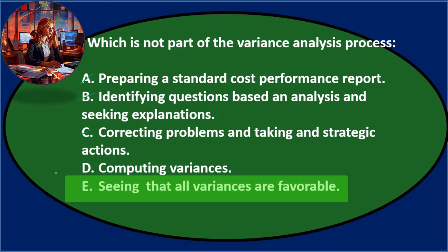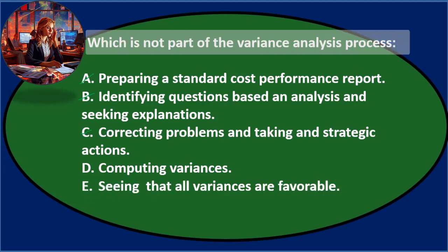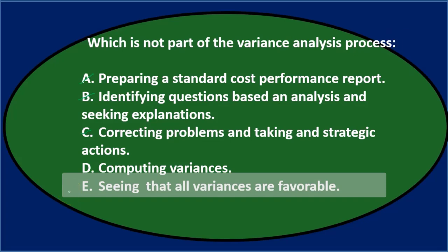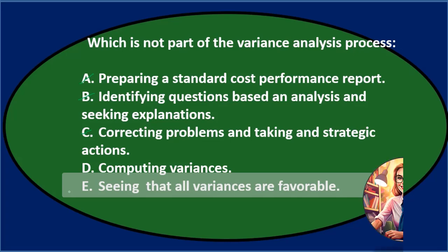That would be something like we're trying to control all variances to be favorable. But which is not part of the variance analysis process - I don't think E is what we're trying to do. We're going to have favorable and unfavorable differences, and we probably do more analysis on the unfavorable differences so we can improve in the future. Although if the favorable differences are substantial, we want to look into why as well. So E looks like the most correct answer. Final answer: which is not part of the variance analysis process? E, seeing that all variances are favorable.